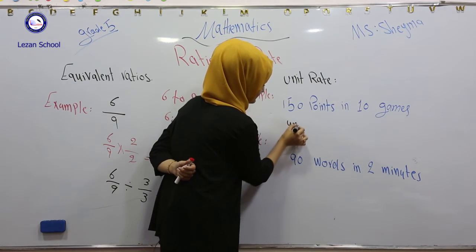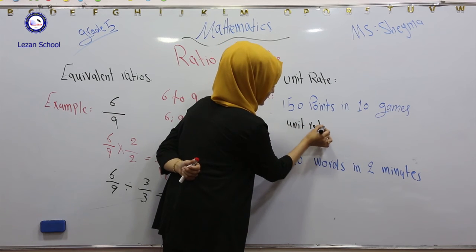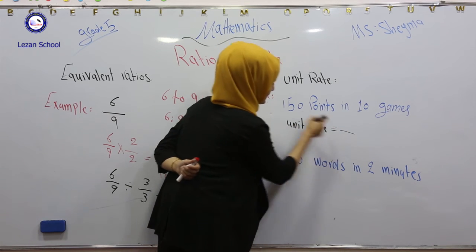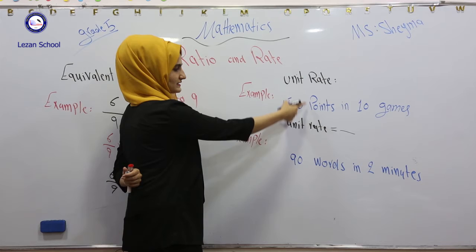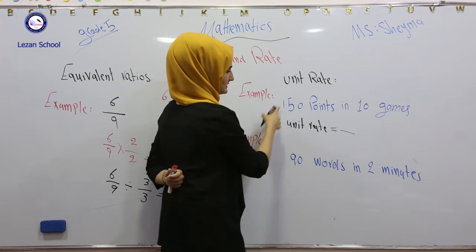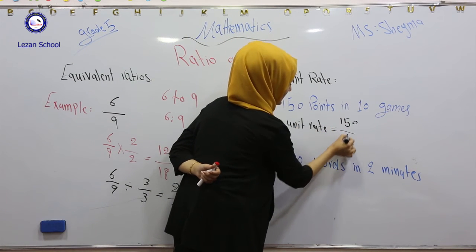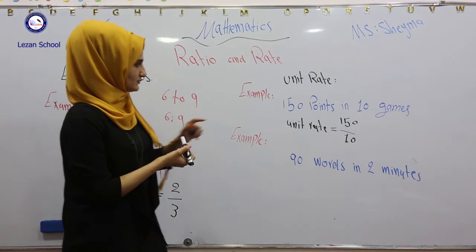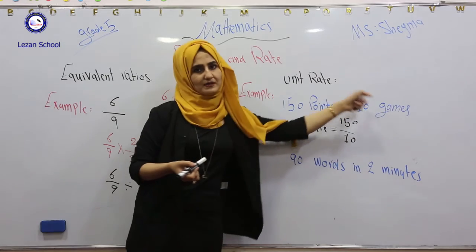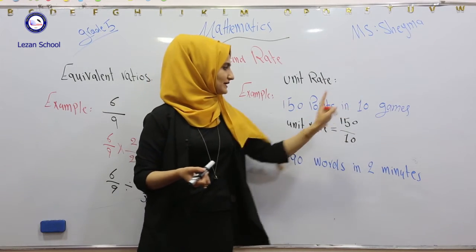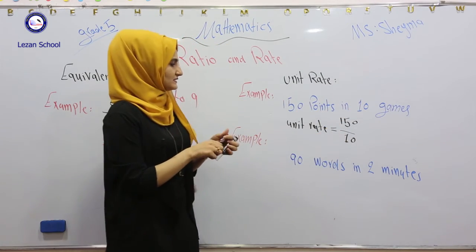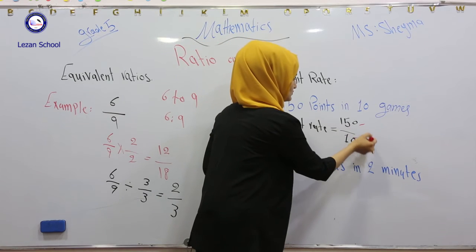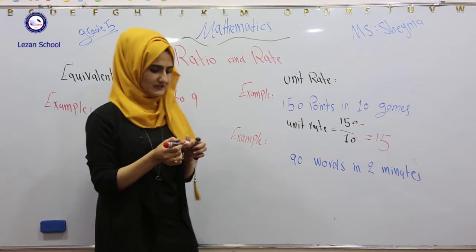We have unit rate. How can we find it? Only by dividing the first number by the second number. Divide 150 by 10. So again, unit rate is comparison between different measures. Points... games... 150 divide by 10. These two zeros go together, 15 divide by 1 equals 15.